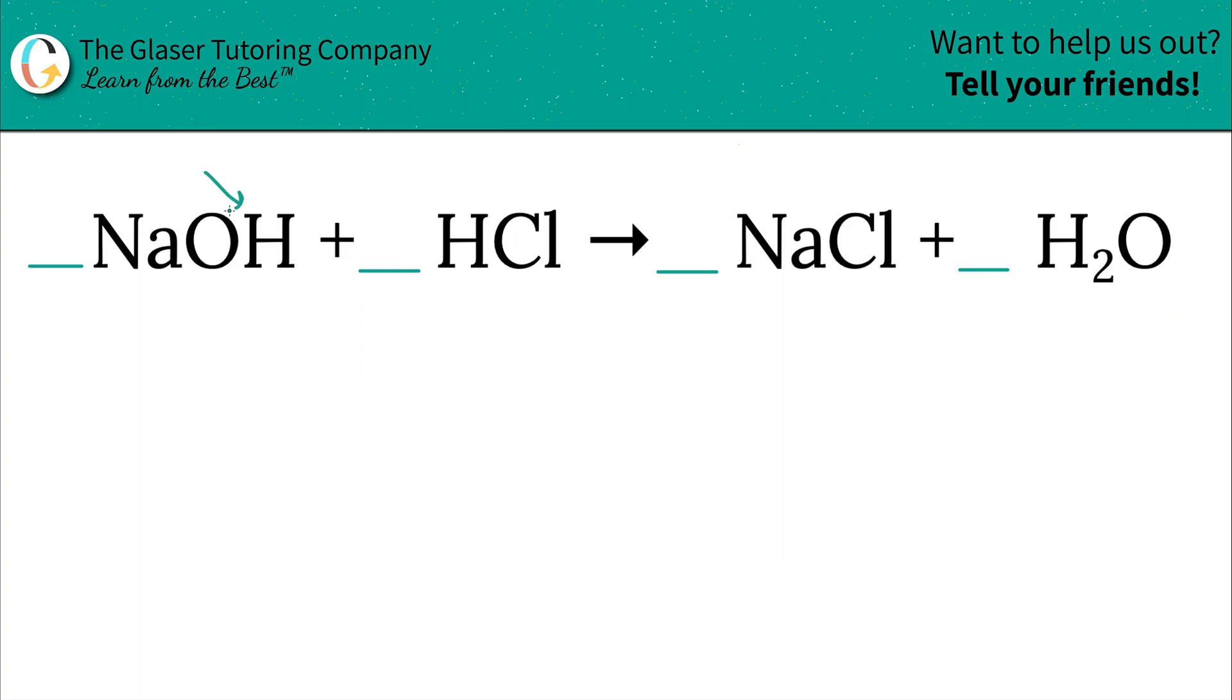Next element I see is going to be hydrogen. Now here's the thing. Hydrogen exists in this compound on the left, and it exists in that compound on the right, and it exists in this compound also on the left. I don't want to work with that. I'm going to save that for the end. I'm not going to worry about hydrogen until the absolute end. So skip it for now.